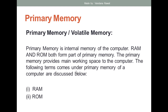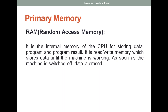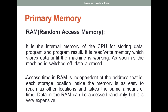Primary memory provides the main working space to the computer, and the terms that come under primary memory are RAM and ROM. RAM stands for Random Access Memory. It is one kind of internal memory of the CPU for storing data, programs, and program results. Basically all the current processing being done with the help of the computer is done with the help of RAM. It is a read and write memory which stores data until the machine is working, and as soon as the machine is switched off the data is removed.